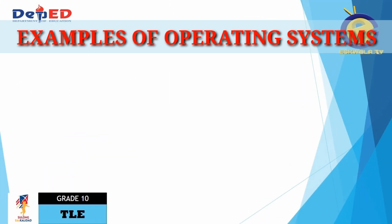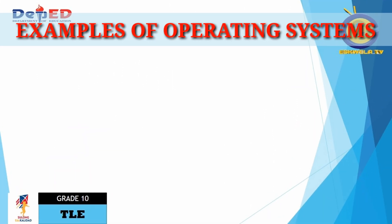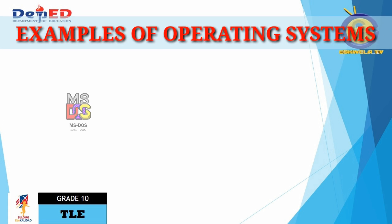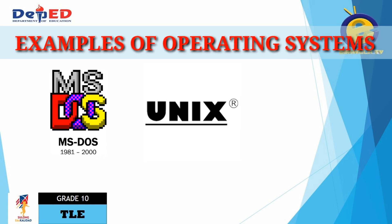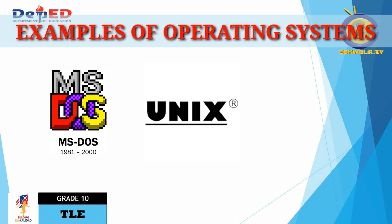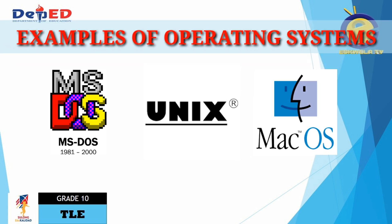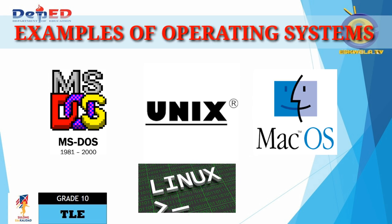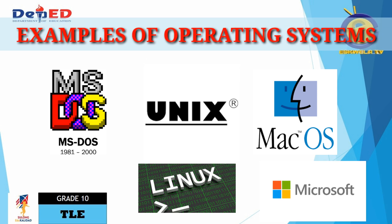Who can give me the examples of operating systems? Very good! They are the Disk Operating System, Unix, Macintosh, Linux, and Microsoft Windows.